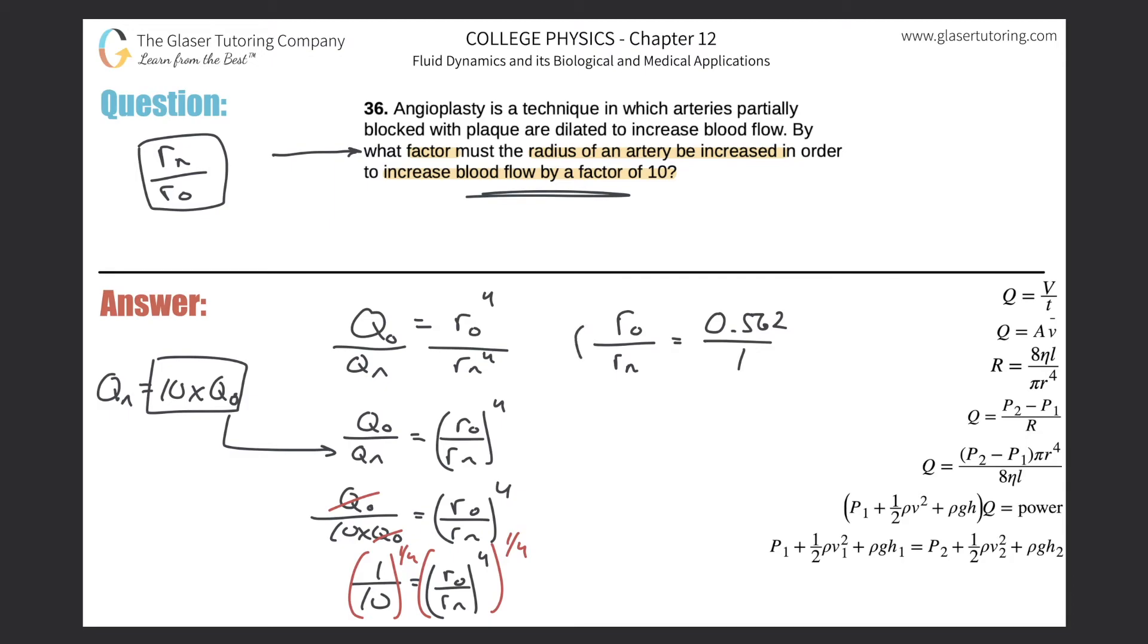But if I need to flip this now, I can flip the left side and also flip the right side. So r sub n over r sub o will equal 1 over 0.562. And that would be about 1.78.